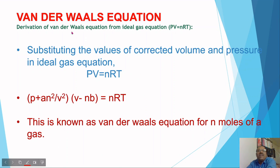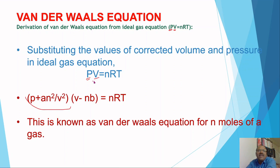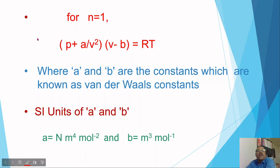Derivation of Van der Waals equation from the ideal gas equation PV = nRT: we must correct both volume and pressure. Substituting the corrected values of volume and pressure into the ideal gas equation PV = nRT, we replace P by the corrected pressure (p + an²/V²) and V by the corrected volume (V minus nb), giving: (p + an²/V²)(V − nb) = nRT. This is the Van der Waals equation for n moles of a gas.